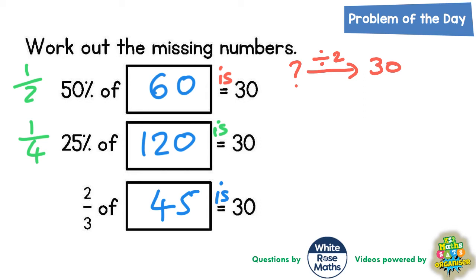So we could do it as a number machine. So if we divided by two to get 30, when we work in reverse we would times 30 by 2 to get back to what we started with. Well, 30 times by 2 would be 60, which also gives us our answer of 60.